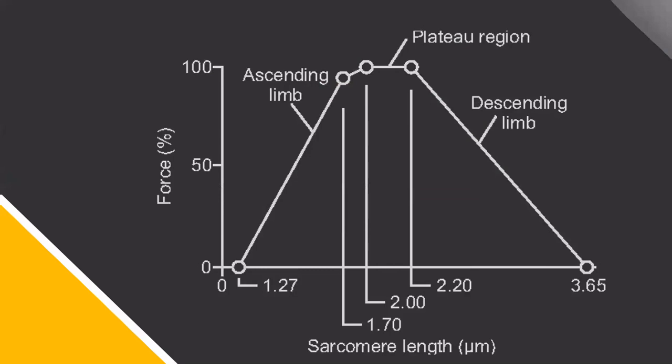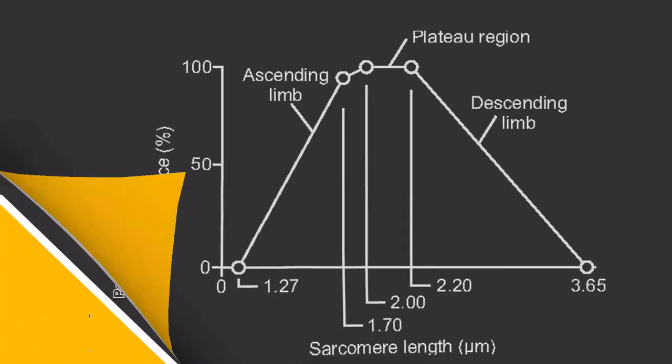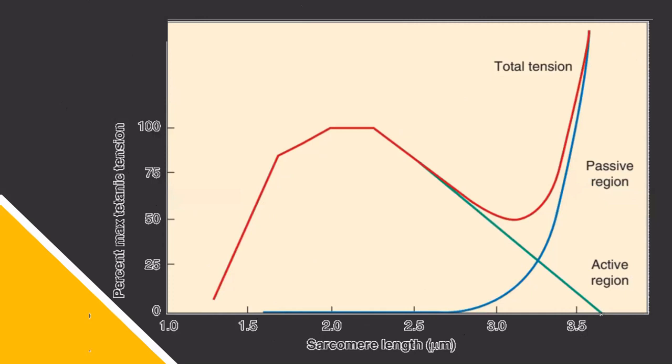The terms ascending limb, plateau region, and descending limb are often used to describe the various regions of this relationship. In addition to the active force-length relationship, it should be noted that the passive tension in muscle increases when stretched beyond resting lengths.